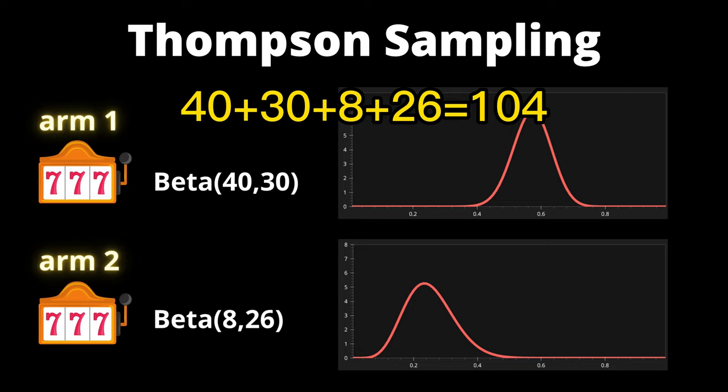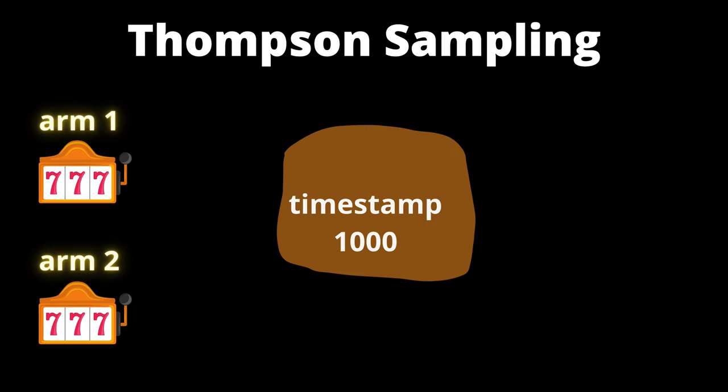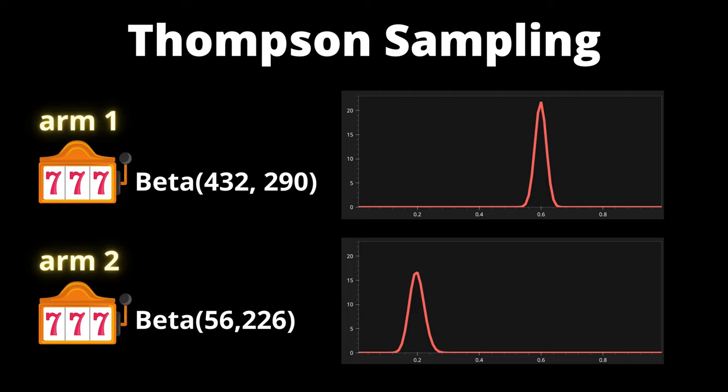And then at time step 1000, we could get beta 432 290 for arm 1 and beta 56 226 for arm 2, with the means of the distribution matching almost exactly the actual winning probability.